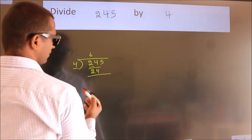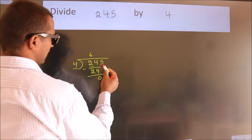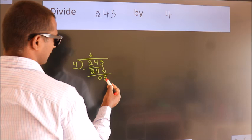Now, we should subtract. We get 0. After this, bring down the beside number. So, 5 down. So, 5.